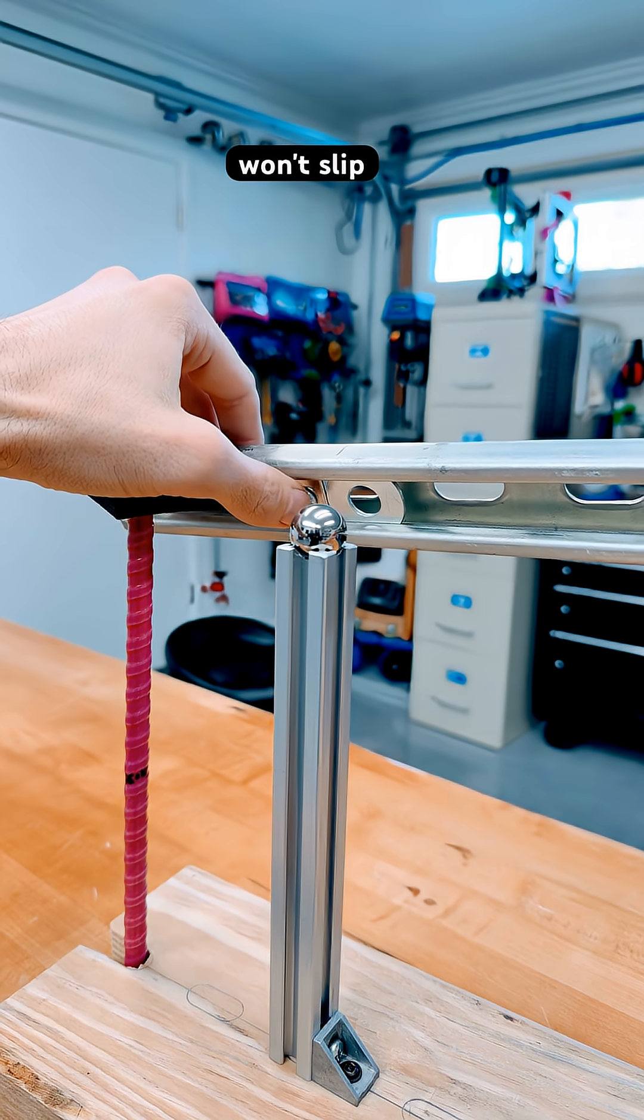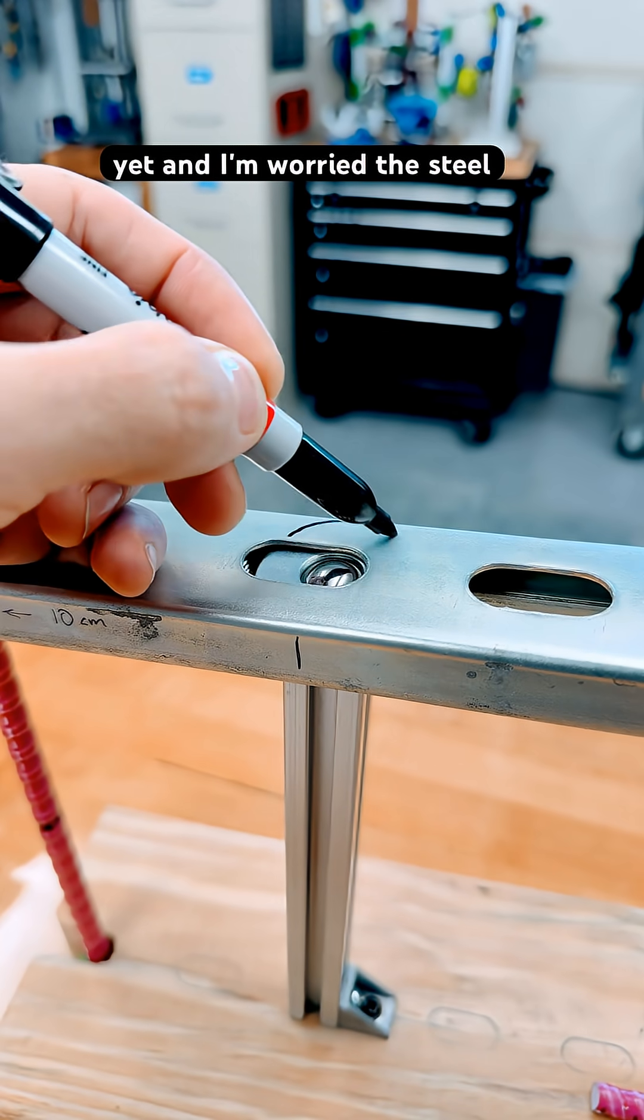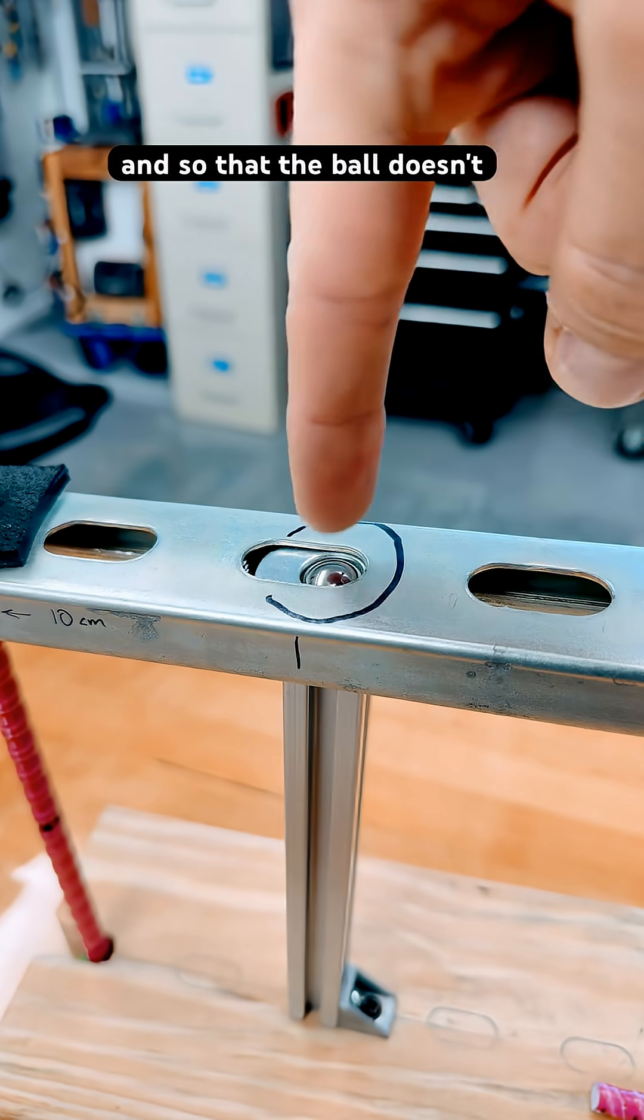I added the washer and it won't slip in this direction because I've put the nut. I haven't run this test yet and I'm worried the steel might bend, so the washer will help spread out the force so the ball doesn't just push through.